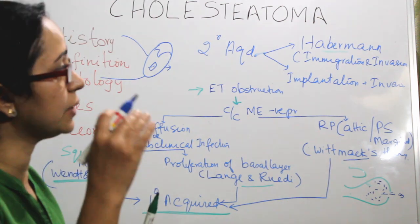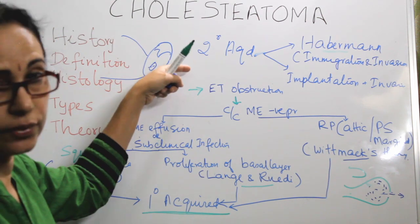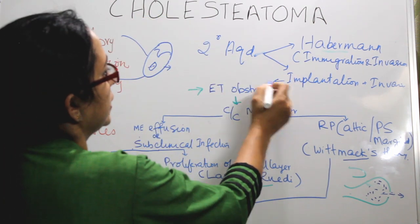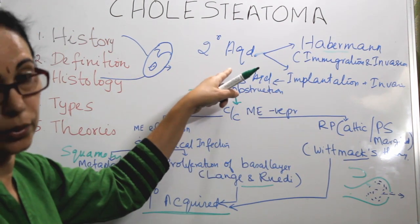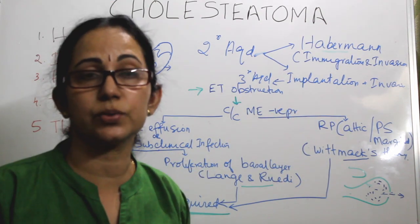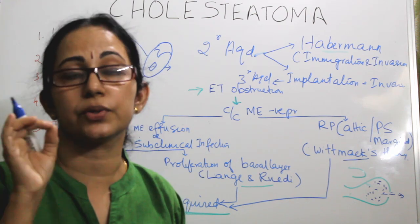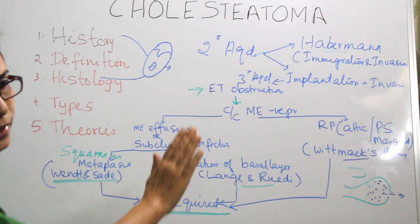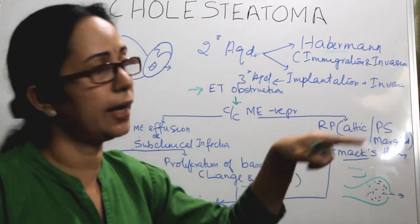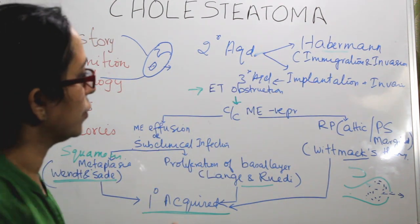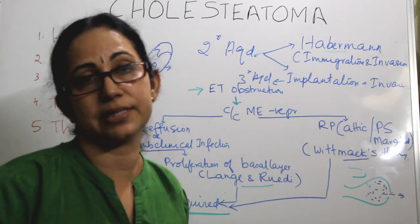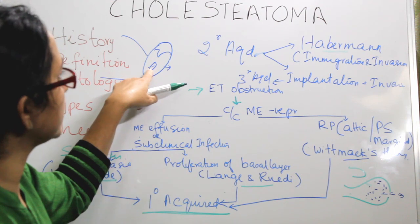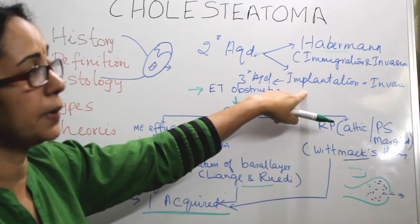Tertiary acquired cholesteatoma — sometimes called implantation cholesteatoma — is iatrogenic, caused by overlay myringoplasty or ventilation tube insertion, where epithelium from the external auditory canal or tympanic membrane is implanted into the middle ear. So: primary acquired involves invagination; secondary acquired involves migration through a perforation; and tertiary acquired involves iatrogenic implantation.